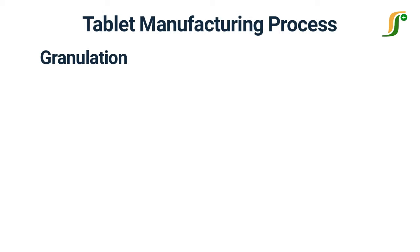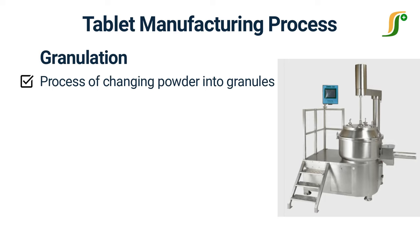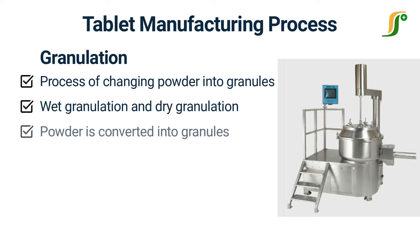Granulation is the most important step of tablet manufacturing. It is the process of changing powder into granules. Granulation improves the flow of the material, which makes the compression process easy. There are two main types of granulation: wet granulation and dry granulation. Wet granulation involves the addition of a liquid to the powder, and then the powder is converted into granules.